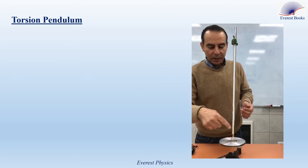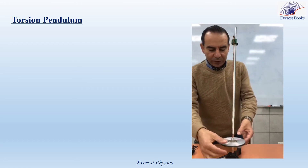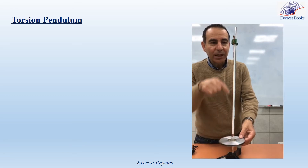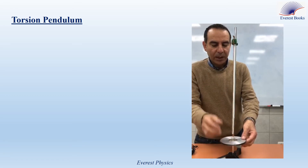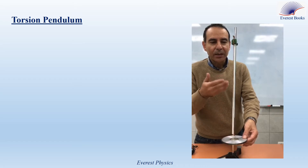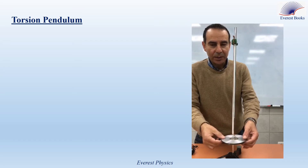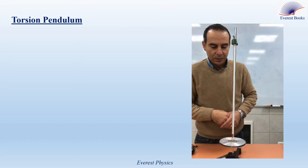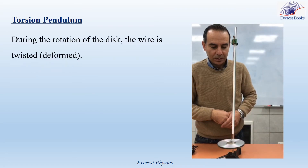In this experiment, the rigid body is a disc. When we rotate the disc by an angle theta in the horizontal plane about a vertical axis passing through the torsion wire, the torsion wire is twisted or rotated by the same angle theta. Then it exerts a restoring moment on the disc. This restoring moment tends to return the disc to its equilibrium position as shown, and the oscillatory motion starts.